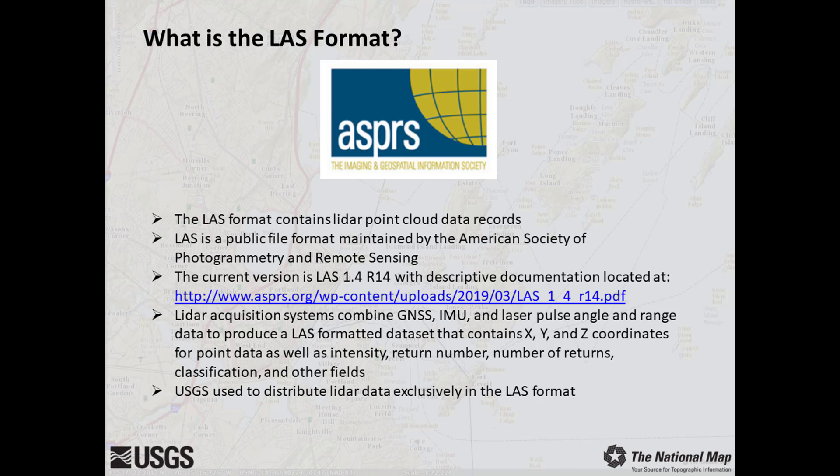A LAS format dataset contains metadata and X, Y, and Z coordinates for a point cloud, as well as additional information such as intensity, return number, number of returns, classification, and other fields. USGS used to distribute LIDAR data exclusively in LAS format. However, we switched to LAZ format in 2019 to lower data storage and download expenses.